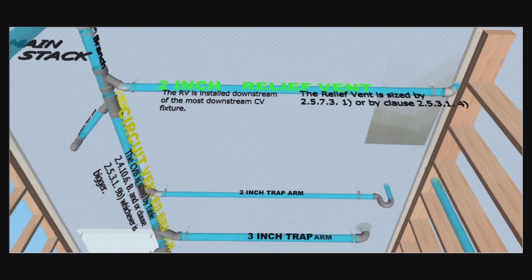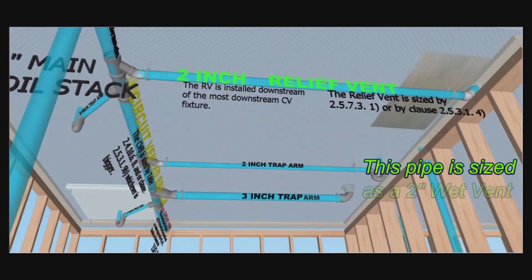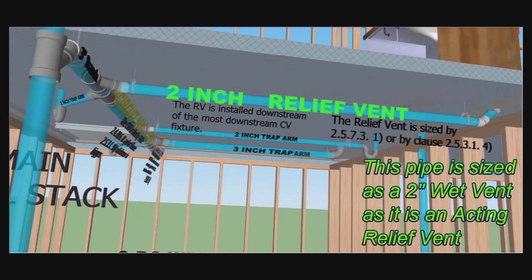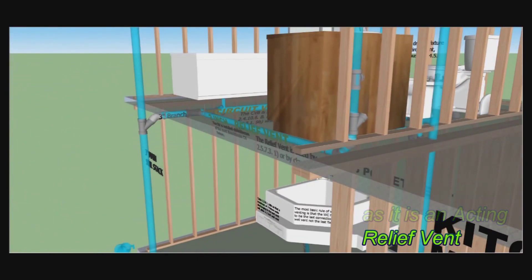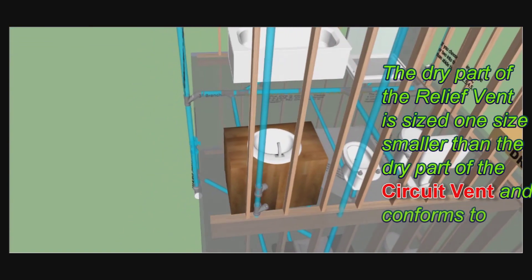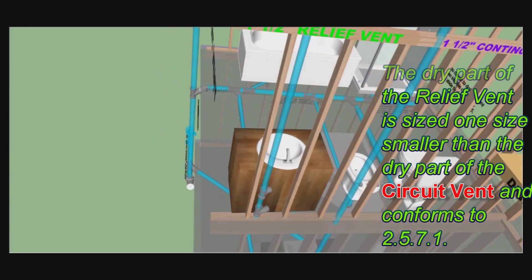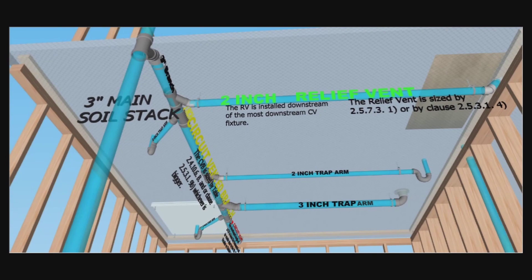The 2-inch relief vent is installed downstream of the most downstream circuit vented branch fixture. The relief vent is sized by Clauses 2573 and 25319B. In this case, it's a 2-inch wet vent because it's acting as a relief vent. Above the acting relief vent is the dry portion of the relief vent, sized by Clause 2573, or one size smaller than the circuit vent, and Clause 2571. That's why it's 1.5 inches.